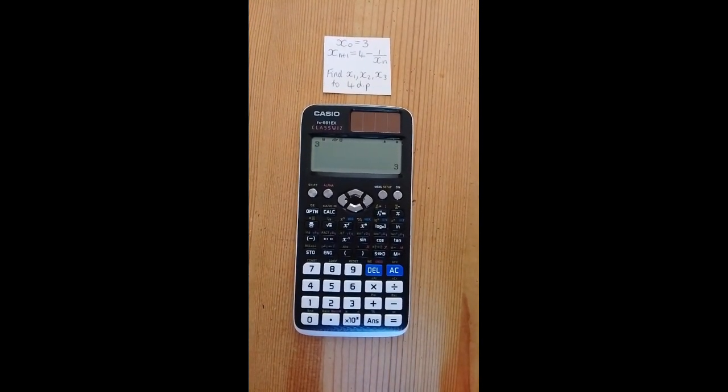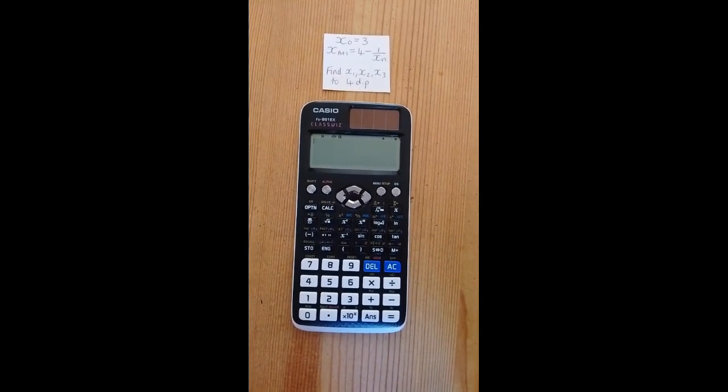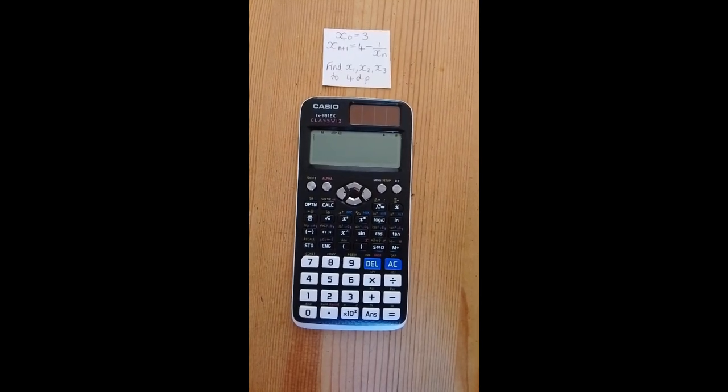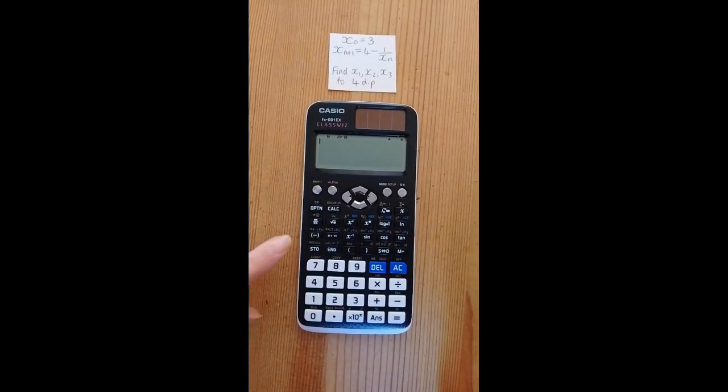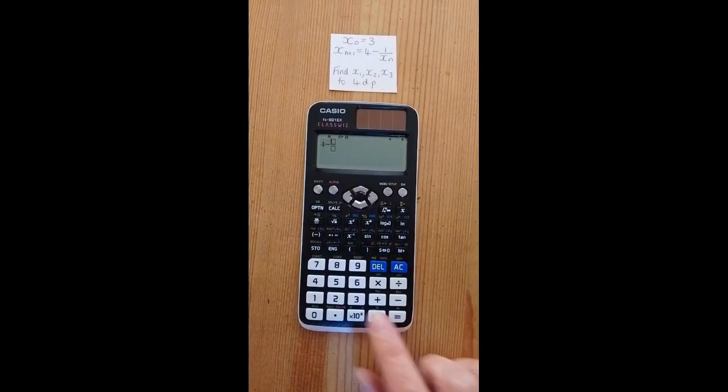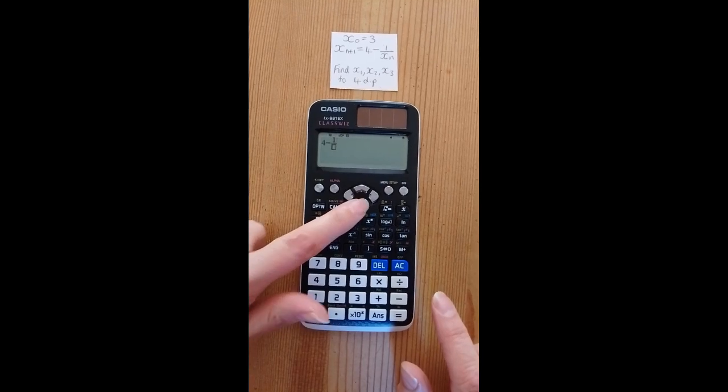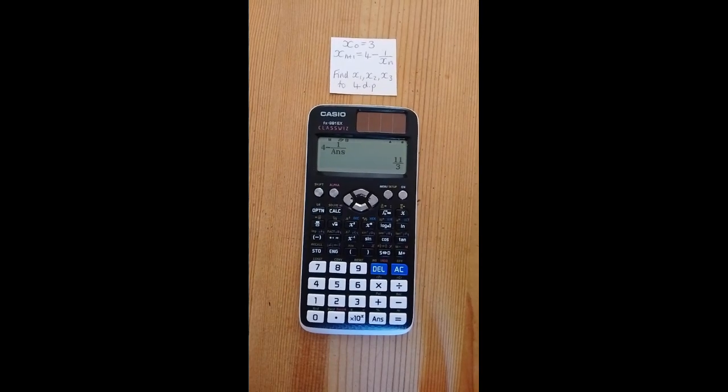Press equals to store this answer. Press AC and enter the iterative formula, replacing xn with answer. This would go 4 minus fraction 1 over answer. Then press equals to get x1.